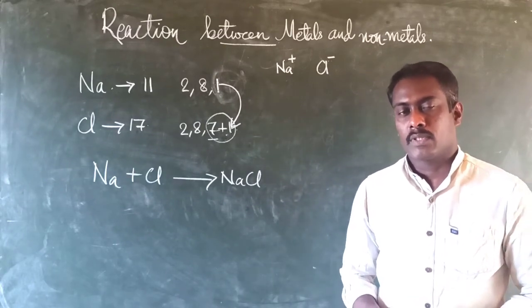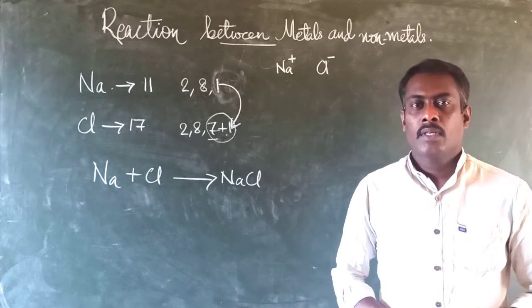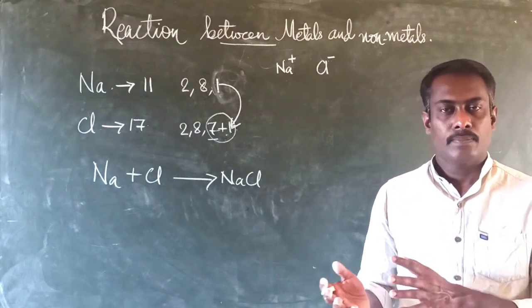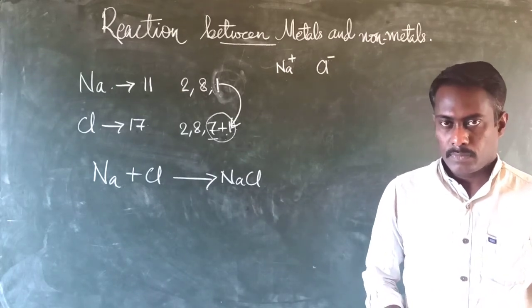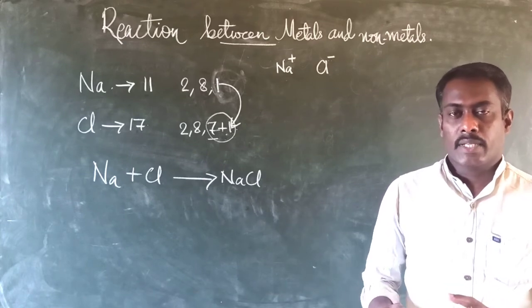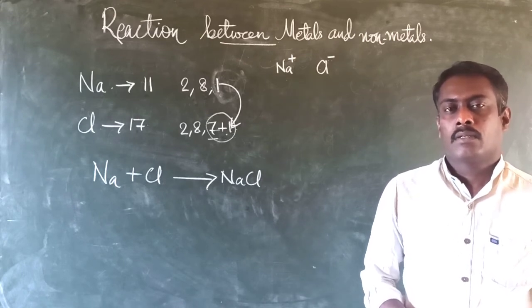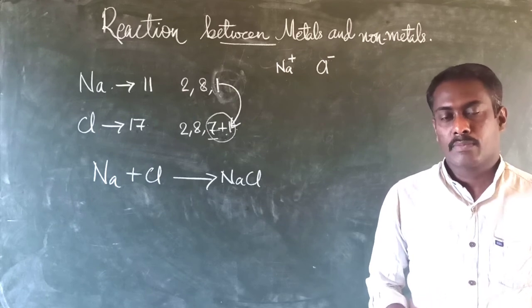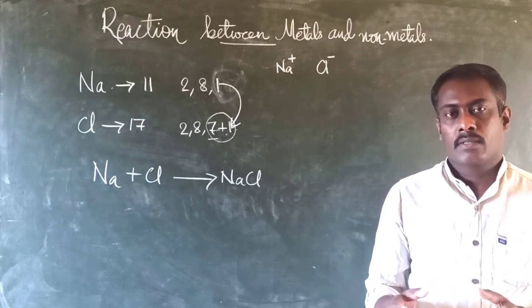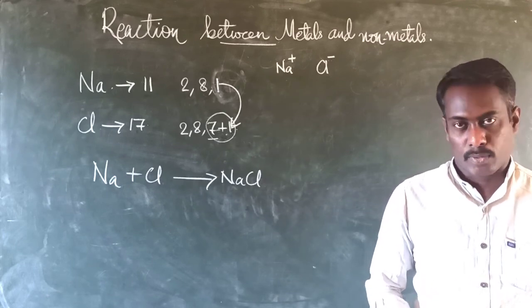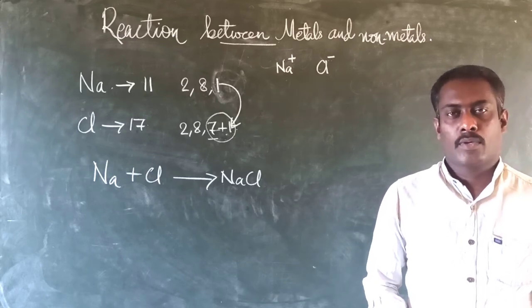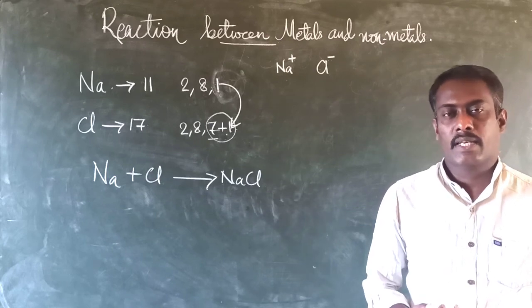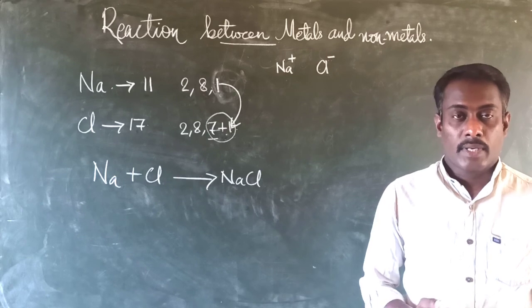Ionic compounds or electrovalent compounds are formed when a metal reacts with a non-metal. They are formed by the complete transfer of electrons from the outermost shell of one atom to another atom of a different element. During this transfer, cations and anions are produced, and the strong force of attraction between the ions forms a bond. The properties of ionic compounds: physical state is solid; solubility — they dissolve in water but not in other solvents like alcohol; they have high melting and boiling points; and they conduct electricity in dissolved form but not in solid state.